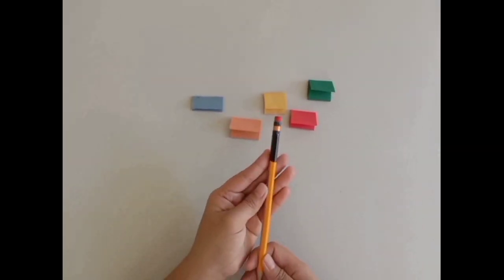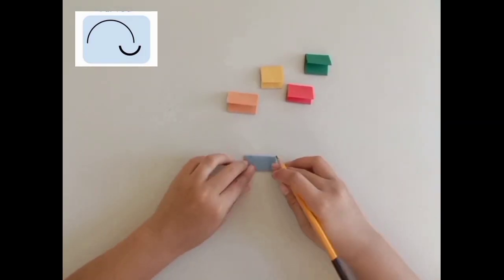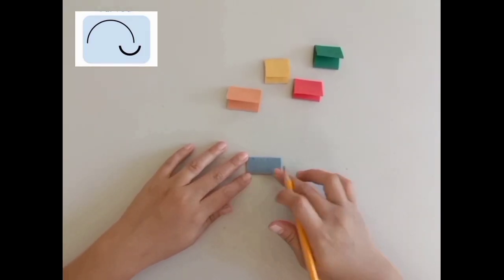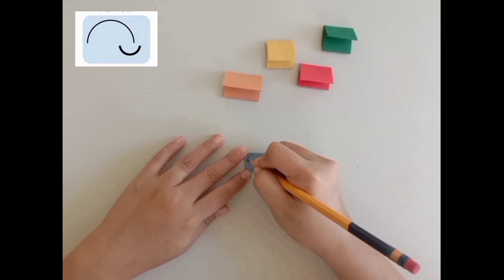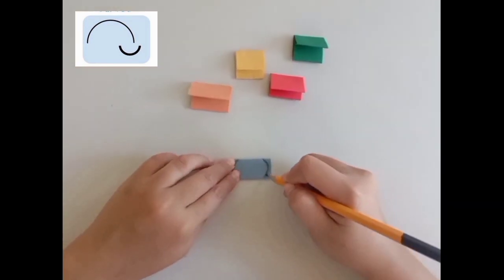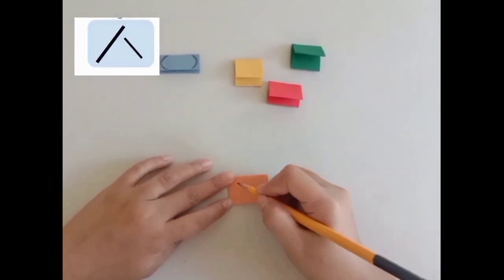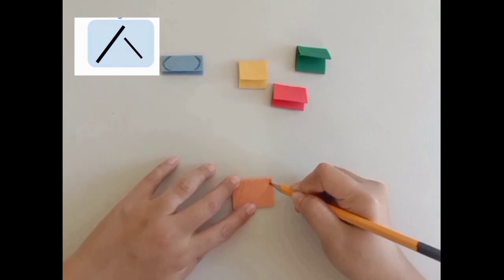After all the folding, I will now use a pencil to draw a curved line on each side of this worm. On this worm, I will draw a slanting line on each side.